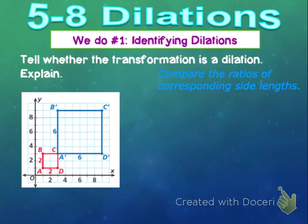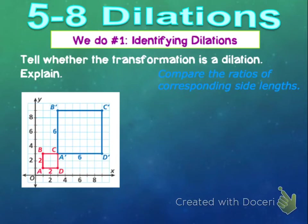So let's do our first example together — number one, identifying dilations. The first thing you're going to need to learn is how to determine whether or not a transformation is in fact a true dilation or just a different shape. So: tell whether this transformation is a dilation. The way we do that is by comparing the ratios of corresponding side lengths.